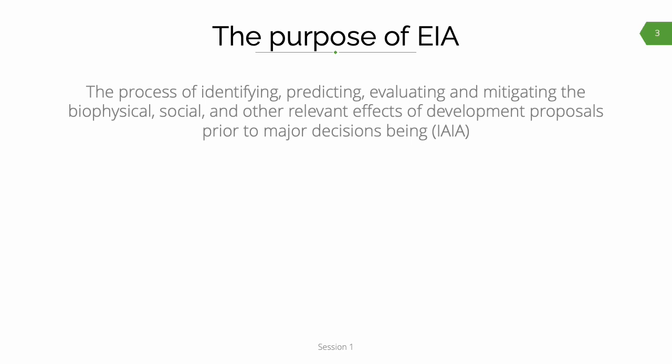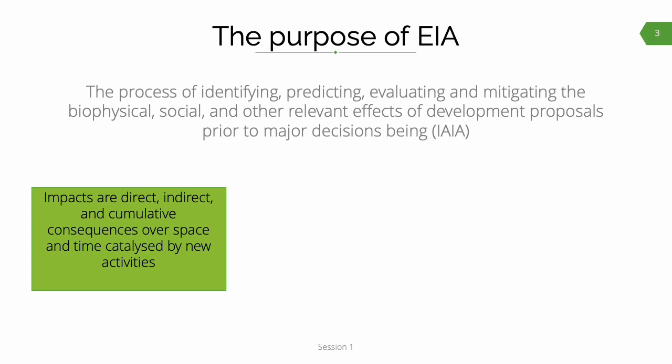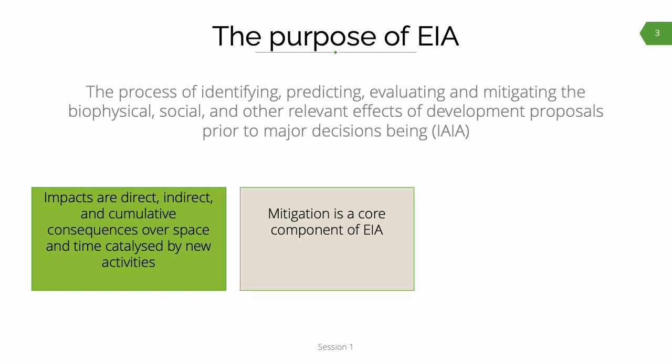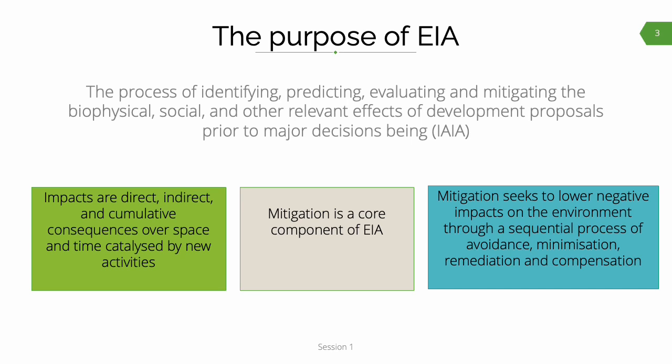This definition covers the scope of EIA and also links it to decision-taking. Underpinning the definition, firstly, the impacts or effects include direct, indirect, and cumulative consequences over space and time, which are catalyzed by new activities. Second, and particularly relevant to this training, mitigation is a core component of EIA. What mitigation does is seek to reduce negative impacts via a sequential process of avoidance, minimization, remediation, and compensation — the sequential steps encapsulated in what we refer to as the mitigation hierarchy.